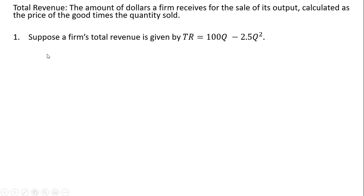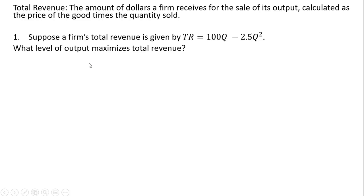Problem one: suppose a firm's total revenue is given by the following equation. Q is the quantity of output, TR is total revenue. What level of output maximizes total revenue?